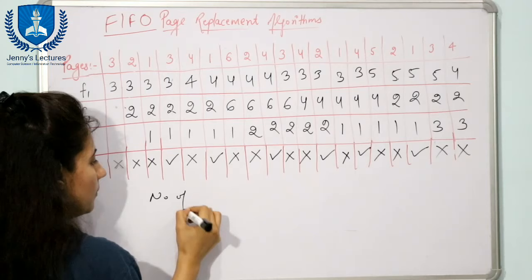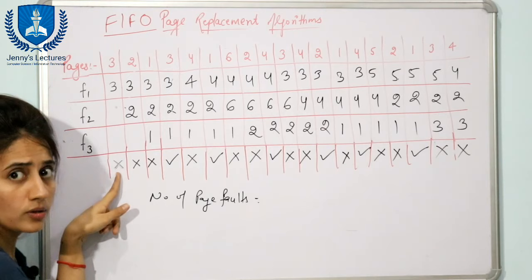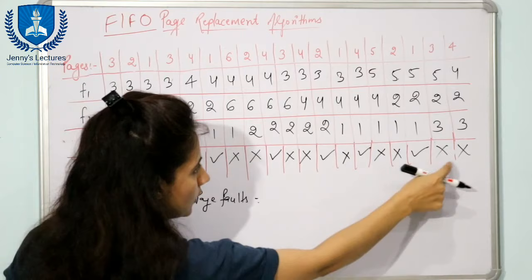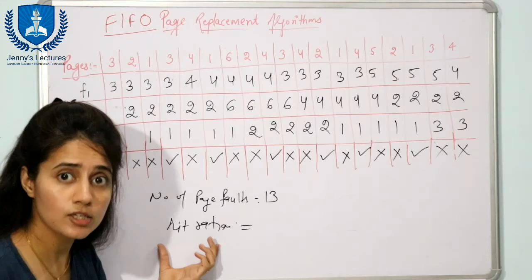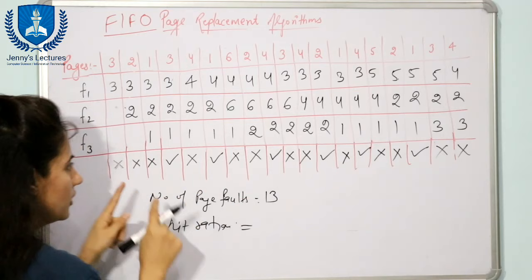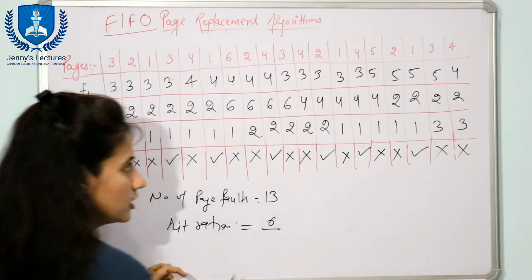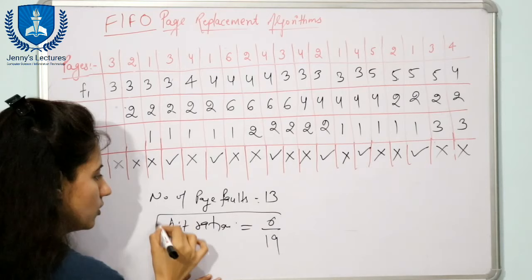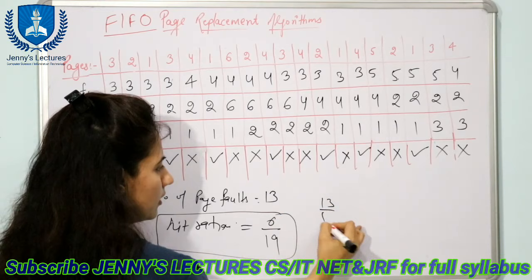Now counting the results: the number of page faults is 13 (count all the misses). The hit ratio is: number of hits divided by total references. There are 6 hits out of a total of 19 references, so the hit ratio is 6/19. You can also find the miss ratio, which is 13/19 — total number of page faults divided by total references. This is how the FIFO page replacement algorithm works.